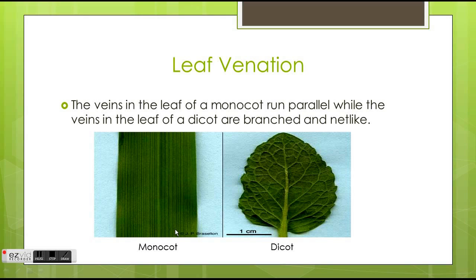While on the right side in the dicot, we see that it is branched off from a main one and has a net-like structure. This would be an example of a walnut tree leaf.